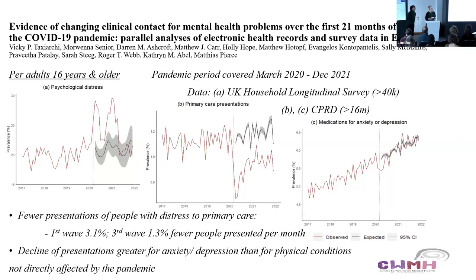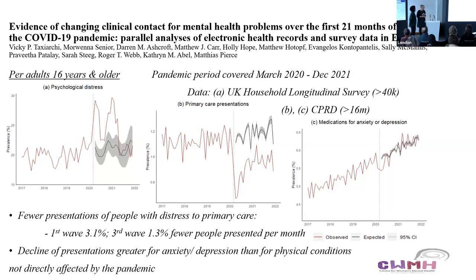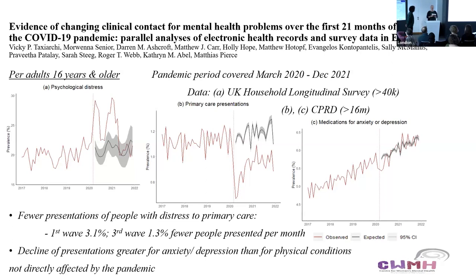Question: Do we have any similar data for children? I believe it could be done — similar data could be found from CPRD primary care data, and the UK Household Longitudinal Study that we used also has data on children and young people, although those data are taken every couple of years.